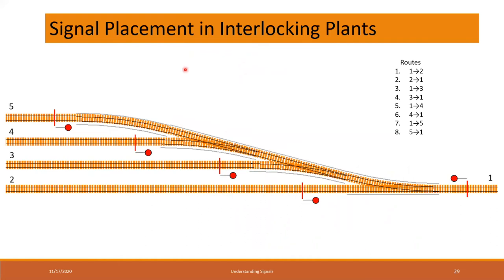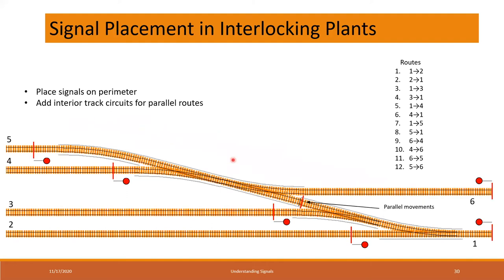Let's look at a slightly different interlocking plant - basically a ladder. I can enumerate all the routes: I've got eight of them. If I draw a box around it, you can see where the signals would be, and I moved them in a little bit because you can slide your block boundary and signals along the track to wherever makes sense. If I add one more track - another entry track - I've gone from eight routes to 12 routes, so complexity has gone up by 50%. Place the signals on the perimeter and then add interior track circuits for parallel routes.